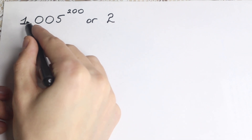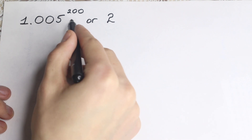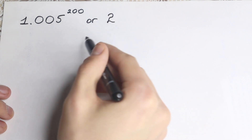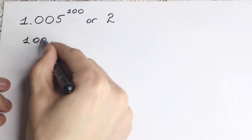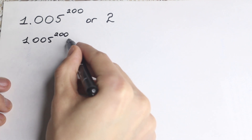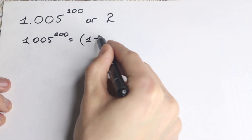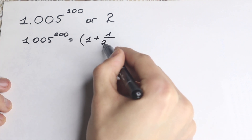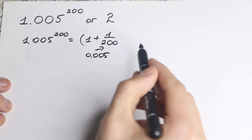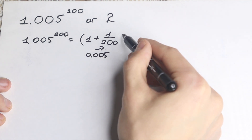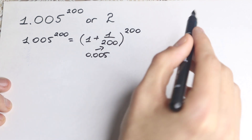We have a really interesting expression on the left hand side: 1.005 to the power 200. Let's try to simplify this or rewrite it in a different way. We know that 1.005 can be written as 1 plus 1 over 200, because 1 over 200 is 0.005. So we have (1 + 1/200) to the power 200. I hope you understand this step.